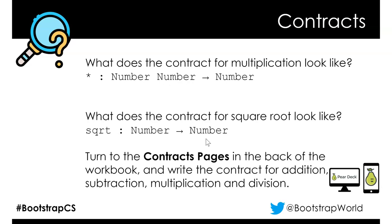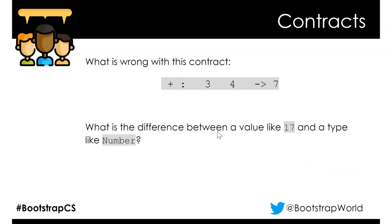Think quickly: what's wrong with this contract? It looks like a contract, but something's not right. Contracts have data types - this one has the value 3 and value 17, but for a contract it needs to be the data type, which is 'Number, Number → Number.' Think about the difference between a data type (like Number) and a specific example (like 17). That distinction comes up all the time and is important for programmers.